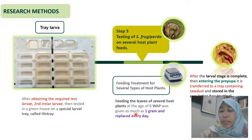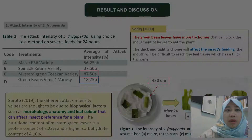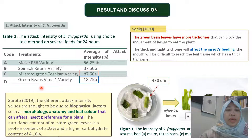Feed was given as much as one gram and replaced every day. After the larval stage was complete, the larvae entered the prepupa stage and were transferred into a tray containing sawdust and stored in the rearing box. This is our larvae tray, which we call the 'his tray'. The first result data obtained was the attack intensity of S. frugiperda.